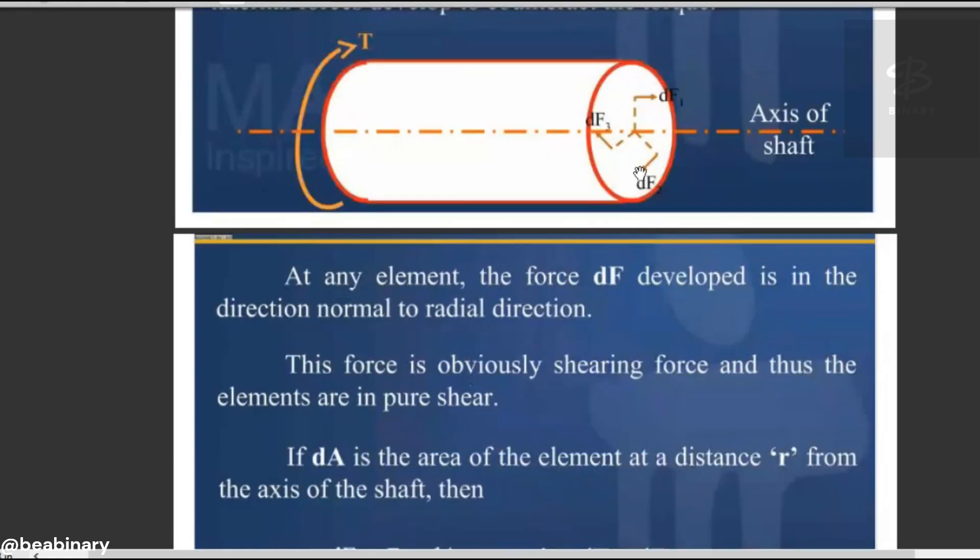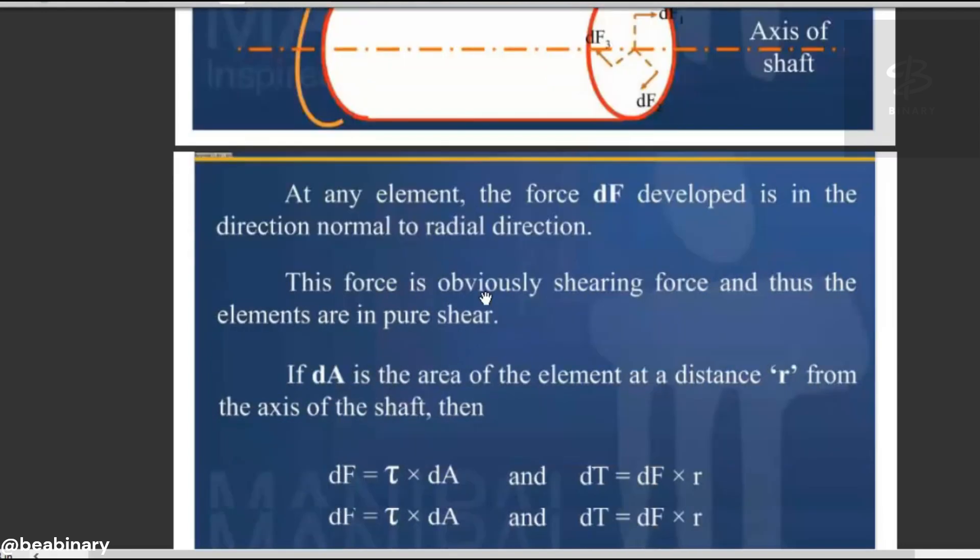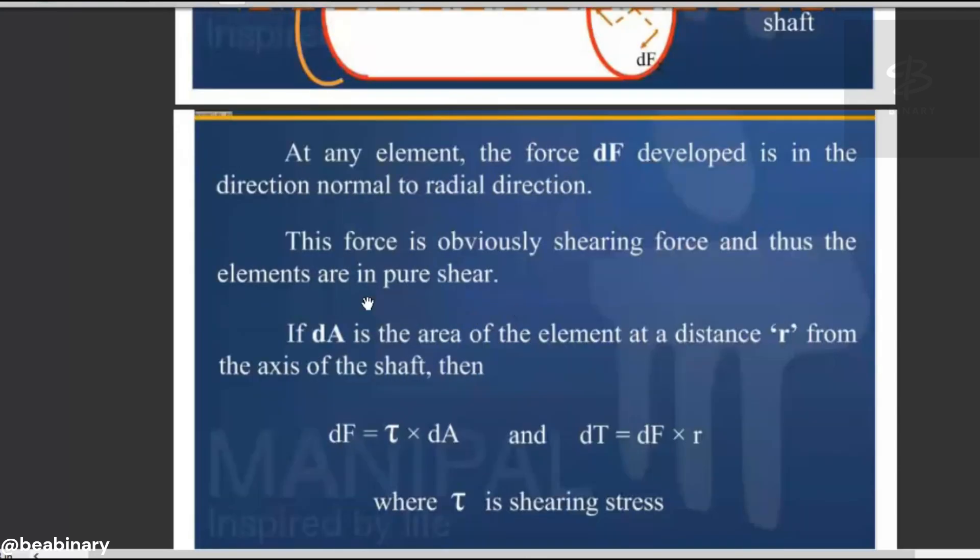So dF1, dF2, dF3 are forces, basically resisting forces. It's twisting moment for resistance which is developing on the cross-sectional area of the shaft. This is because of the pure shear. It is happening.